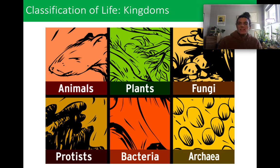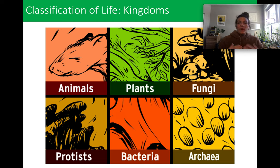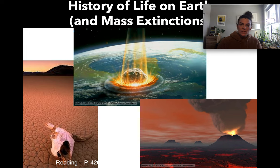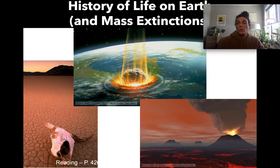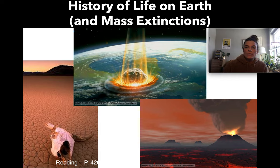We can also classify life in terms of kingdoms. We have animals, plants, fungi — like mushrooms and mold — protists (the most famous being the amoeba, typically single-celled), bacteria, and archaebacteria, which is a more simplified type of bacteria. So we have about six major kingdoms. Our knowledge of how life is classified is always changing and evolving. The ultimate goal of this lecture is to talk about extinction, but to get there we need to start with the history of life on Earth.